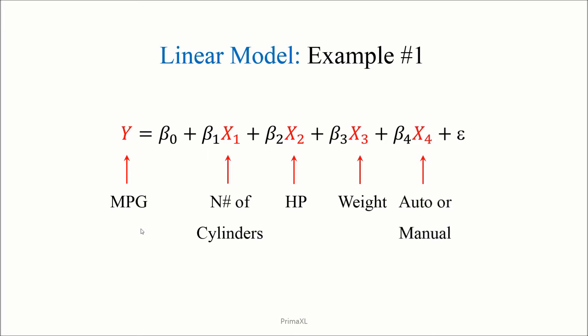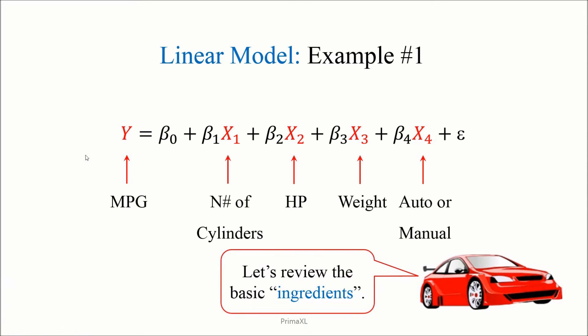Finally, x4 tells you whether the transmission is automatic or manual. So, x1 through x4 contribute to explain the mileage. Now, let's review in detail the basic ingredients of a linear model.